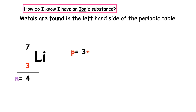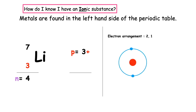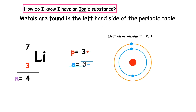That means in the first energy level it has 2 electrons and in the second energy level it has 1 electron. That's a total of 3 electrons which are negatively charged, so the overall charge of that particle is 0.